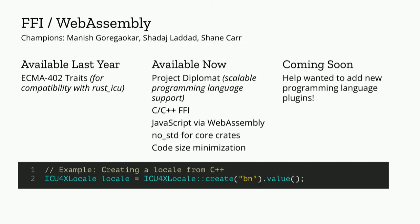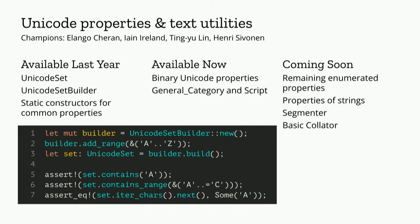We support no-std for core crates, which means ICU4X now runs really well on resource-constrained and IoT devices. We've also done a lot of work on code size minimization, getting very small binaries. Coming soon are contributors to continue scaling to new programming languages. The next category — Alongo, Ian, Tingyu, and Henry — have been doing a lot of work on Unicode properties and text utilities. Last year we had UnicodeSet and UnicodeSetBuilder and static constructors for common properties, but now we have binary Unicode properties as well as enumerated properties: general category and script. Coming soon we'll fill out the rest of the enumerated properties and support properties of strings. Also in the pipeline are segmenter and collator — very important pieces required for ECMA 402 compliance.